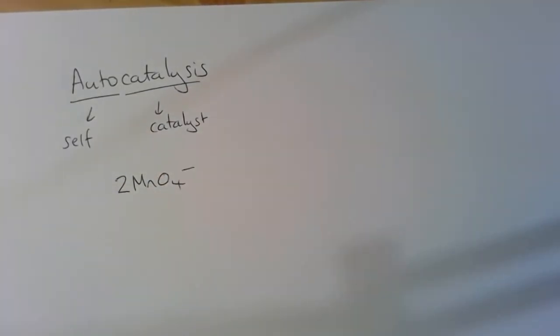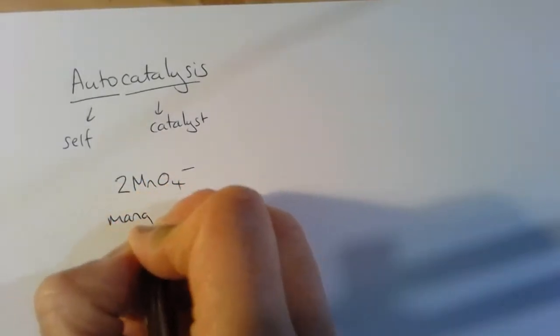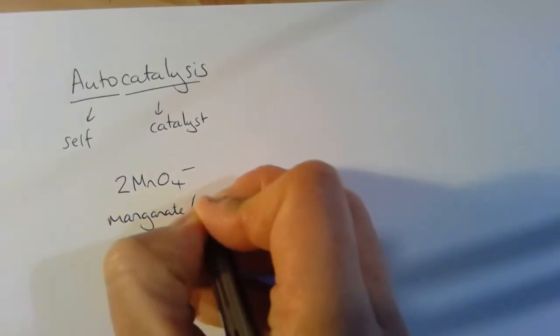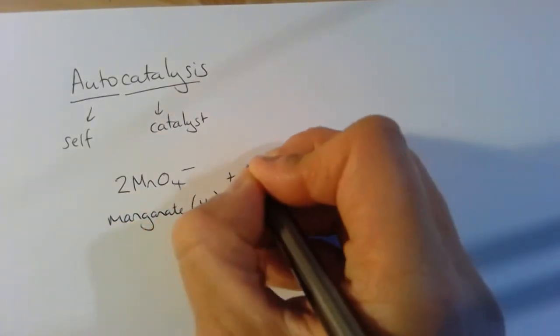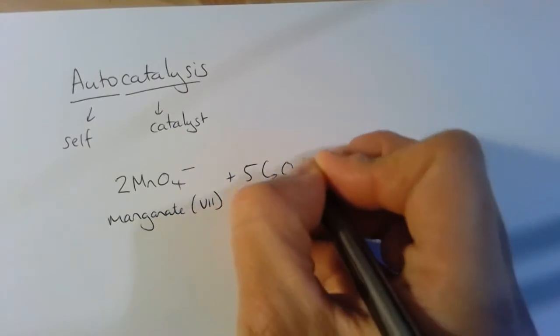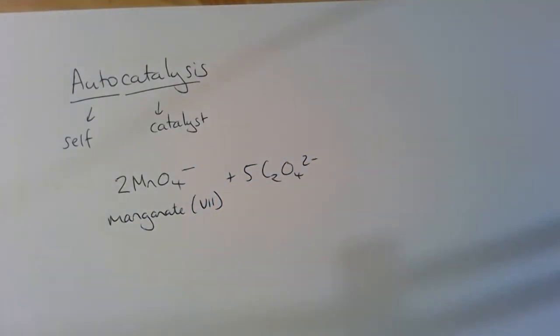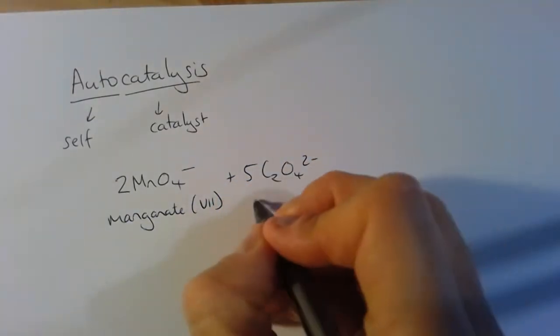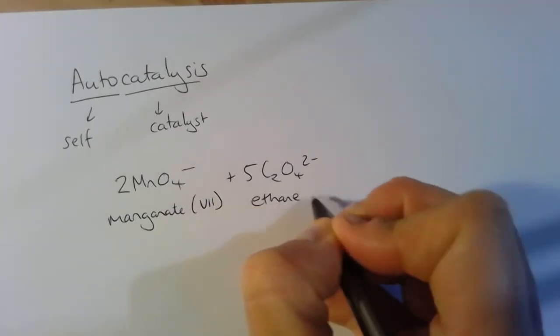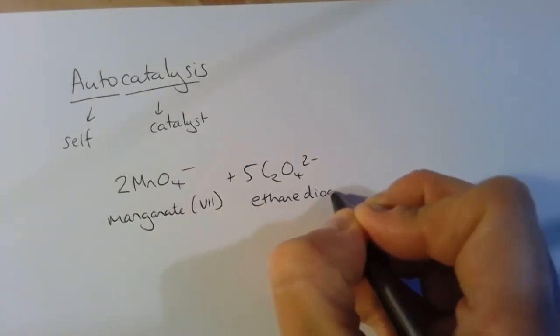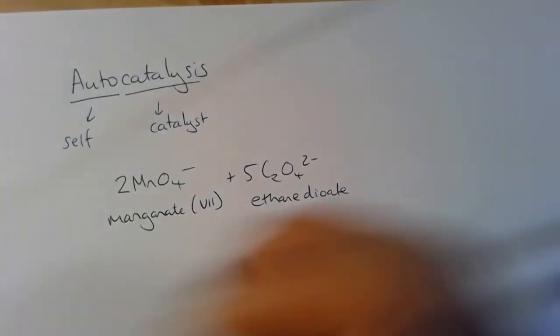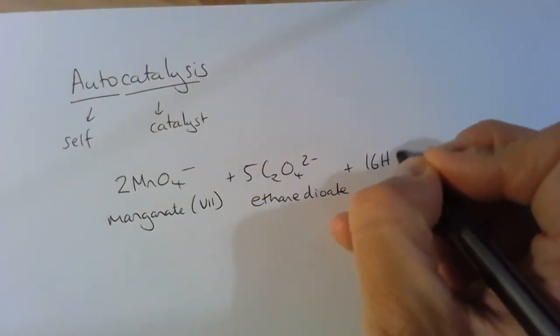We've got 2 MnO4⁻ ions here, manganate(VII), and they will react with 5 ethanedioate, or what they used to be called oxalate ions, but we'll call them ethanedioate because that's something we've come across before. This solution needs to be acidified, so we've got 16 H⁺ ions in here.